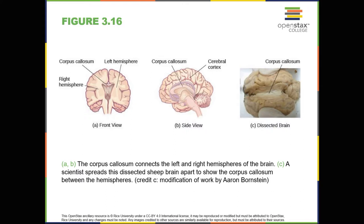Consider Theona, an intelligent, self-sufficient woman who is 62 years old. Recently, she suffered a stroke in the front portion of her right hemisphere. As a result, she has great difficulty moving her left leg. As you learned earlier, the right hemisphere controls the left side of the body. Also, the brain's main motor centers are located in the front of the head, in the frontal lobe. Theona has also experienced behavioral changes. For example, while in the produce section of the grocery store, she sometimes eats grapes, strawberries, and apples directly from the bins before paying for them.